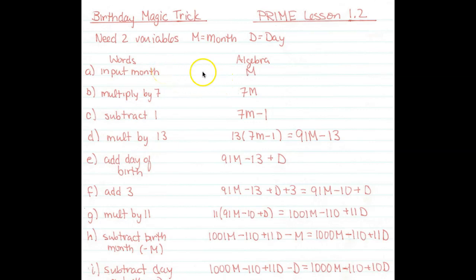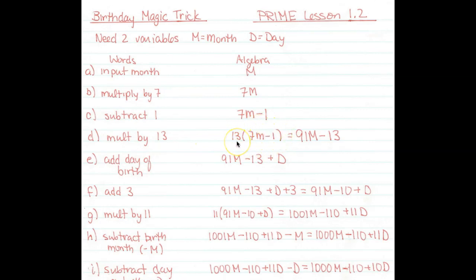When it says 'input month,' that's the same as m. If it says 'multiply by 7,' that's 7m. Subtract 1 — you're subtracting 1 from your 7m. Multiply by 13 means I take this whole expression and multiply it by 13. Some of you left it like that, which makes it really hard to simplify later, so I'm going to distribute. This gives me 91m minus 13.